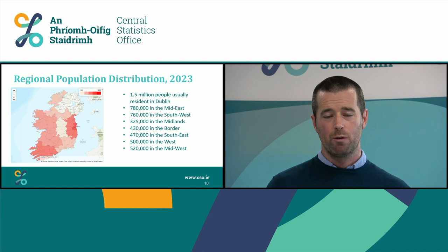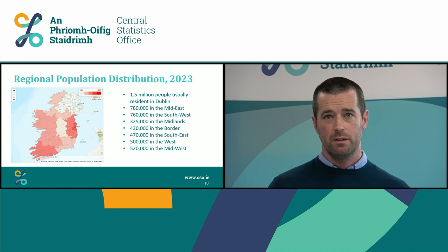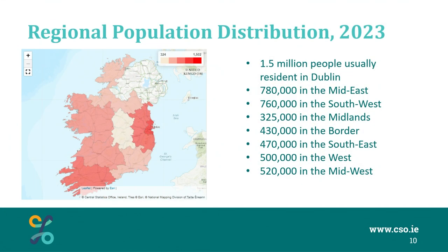For the remainder of this presentation I will focus on the whole population rather than the flows. Firstly, looking at regional population distribution in 2023: as expected, Dublin has the highest number of usual residents at just above 1.5 million. The Mid-East has the next highest population with 780,000 people, followed by the South-West with 760,000. The West has just above half a million, the Mid-West has 520,000, the South-East has 470,000, the Border has 430,000, and the lowest is the Midlands with 325,000 people.